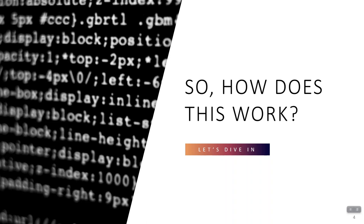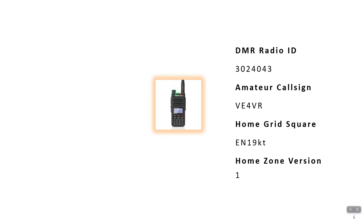Let's dig into how this works. You have a GD77 radio running modified OpenGD77 firmware with more functions being added every week. My function can send and receive data. Here's my radio ID: 302-4043, call sign VE4VR. Where I live is important because this is how we determine who's at home and who's roaming or traveling. My home grid square is EN19KT, and the version of my home zone is version one — because if you visit multiple times, I might have an updated version with different frequencies or color codes, and you need to know to grab the new version.